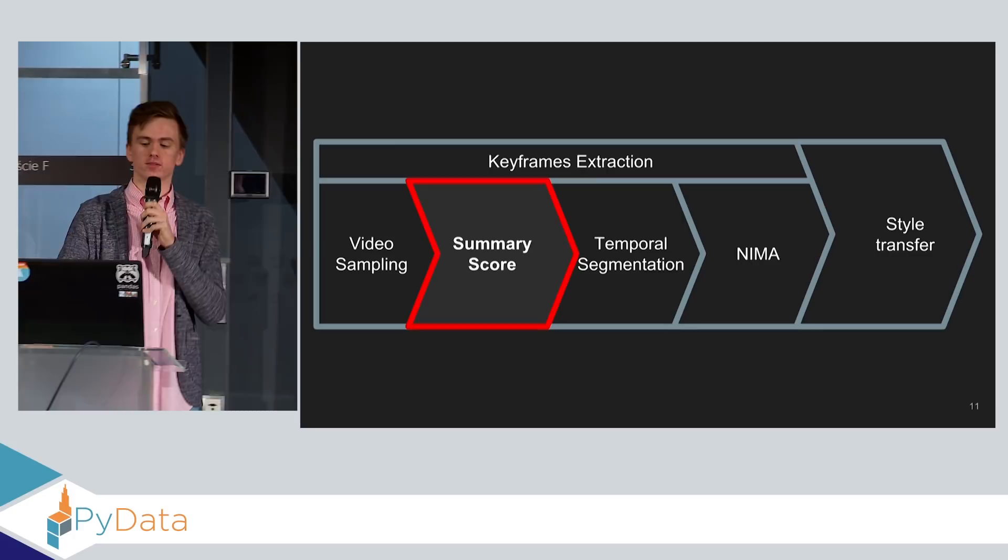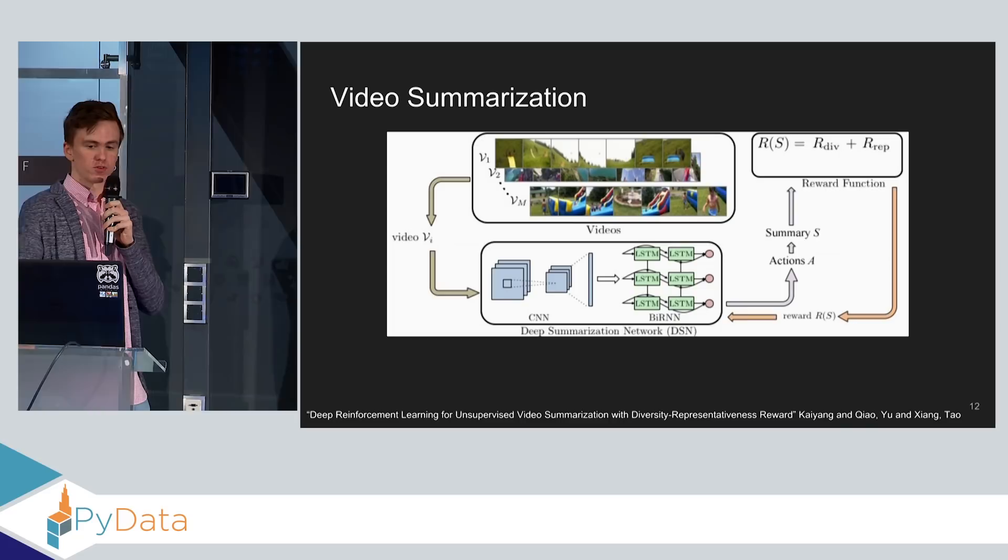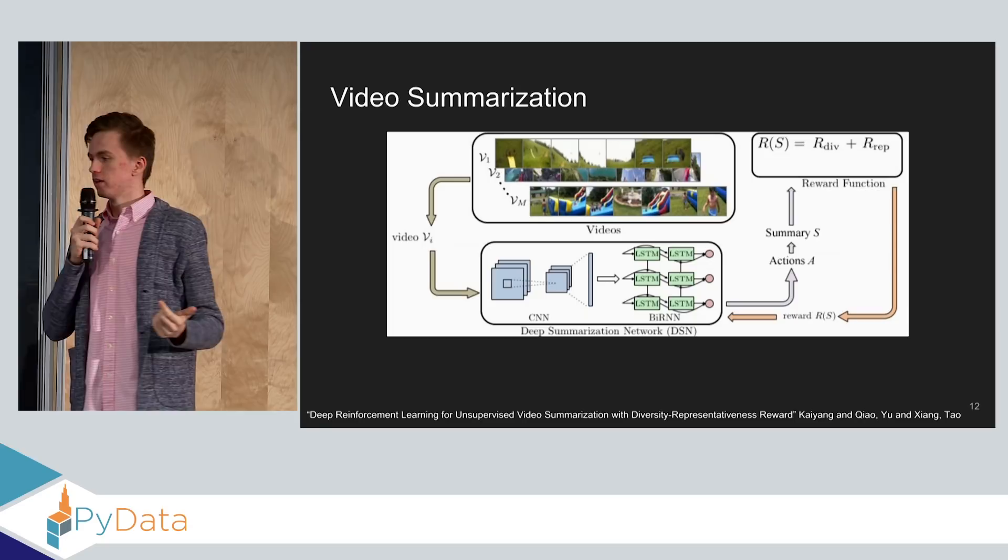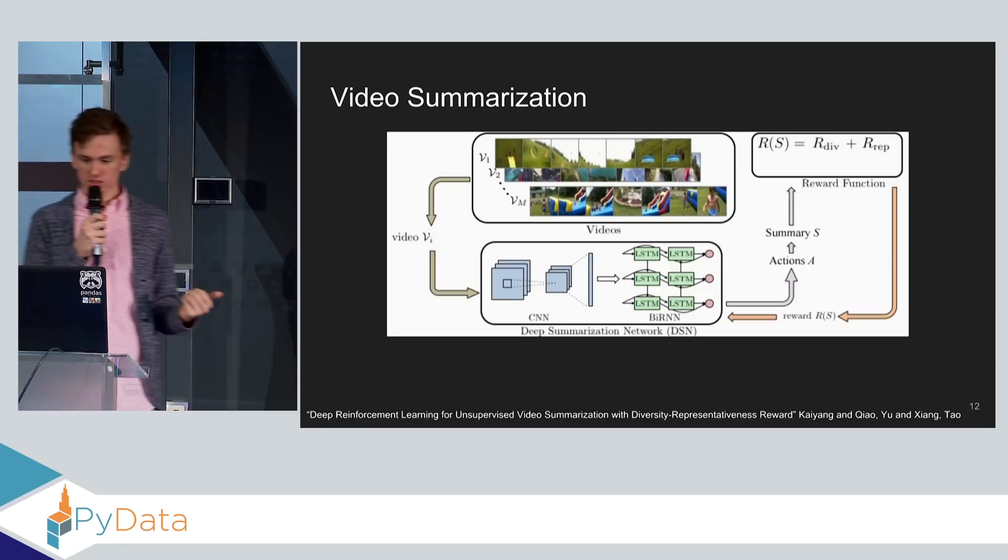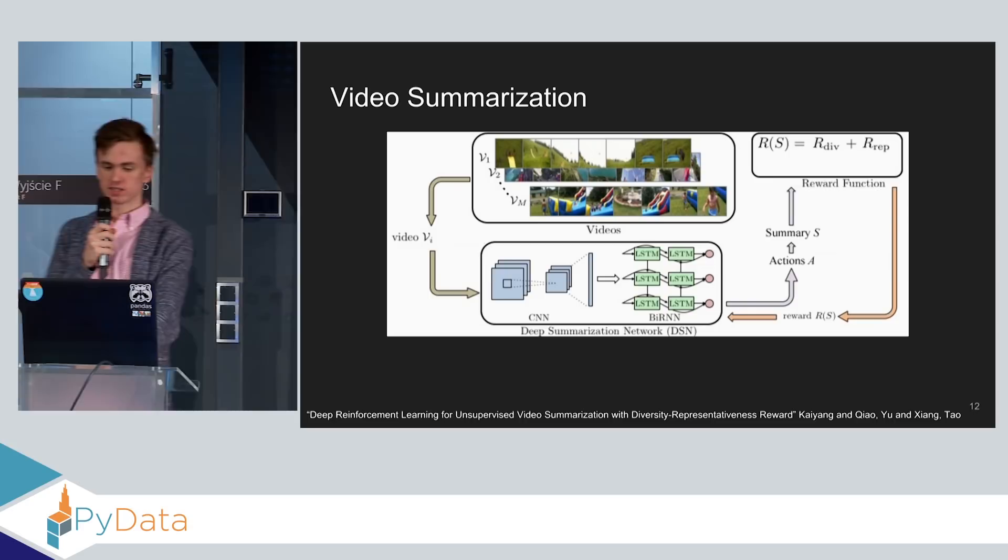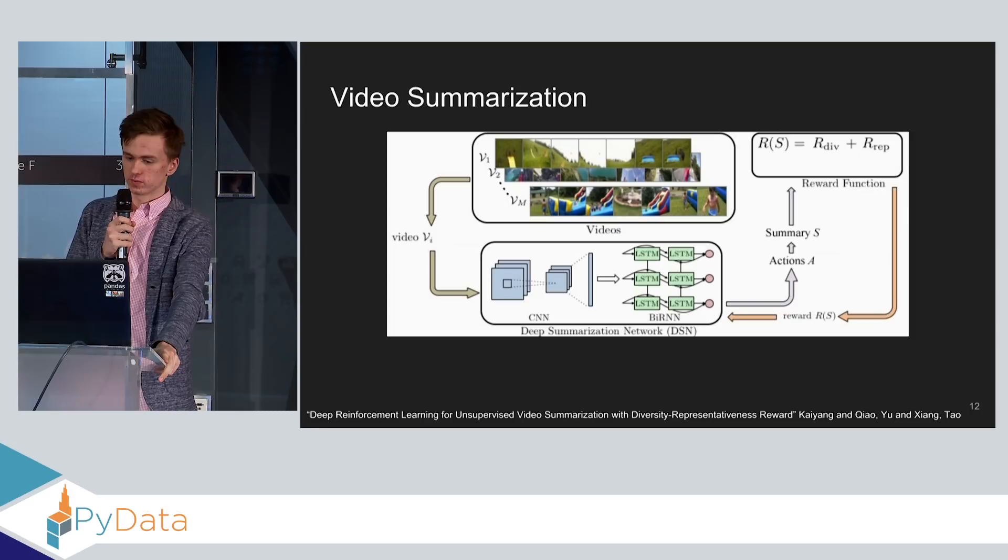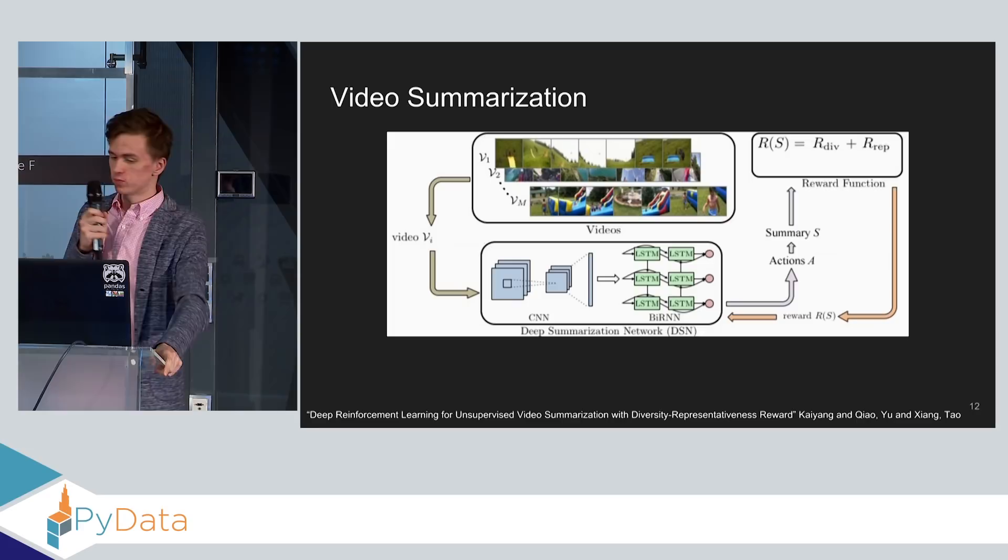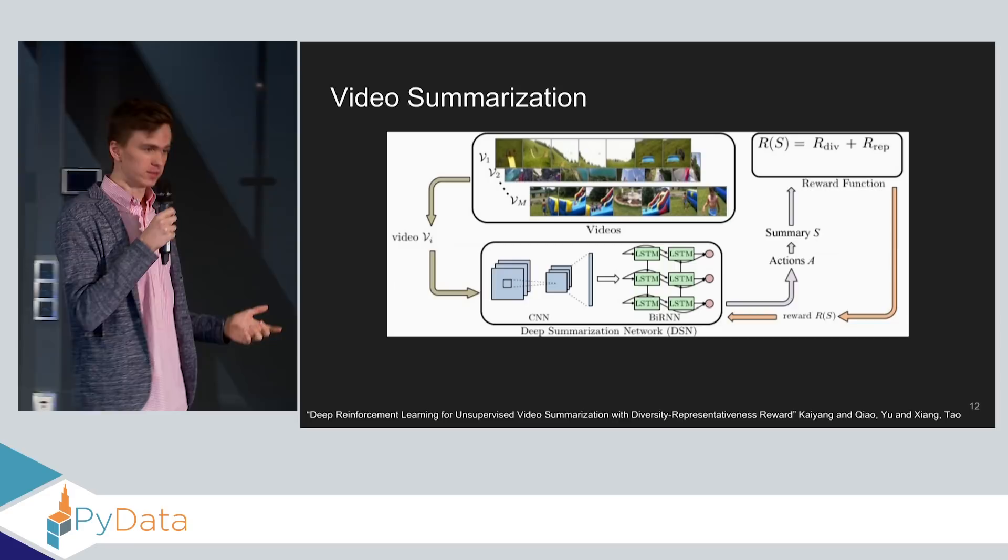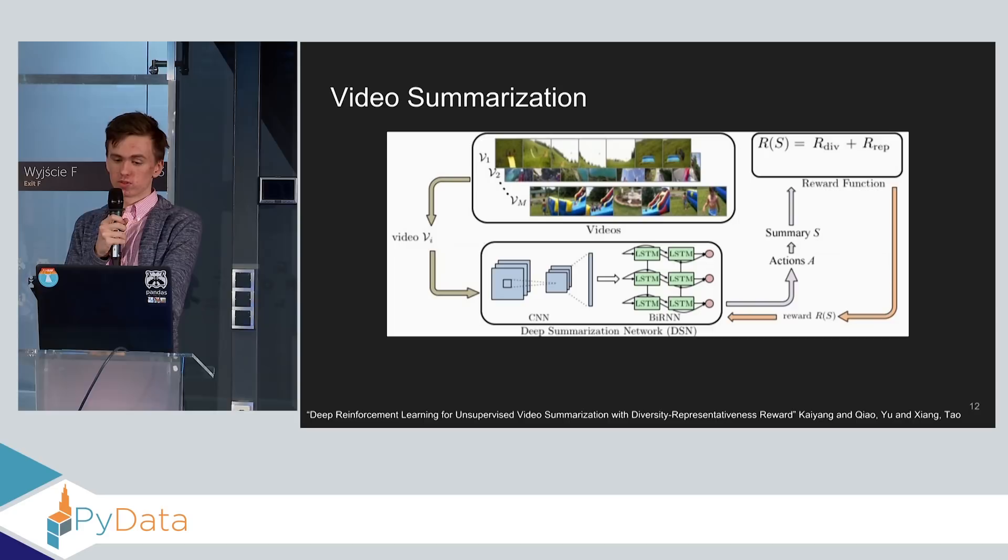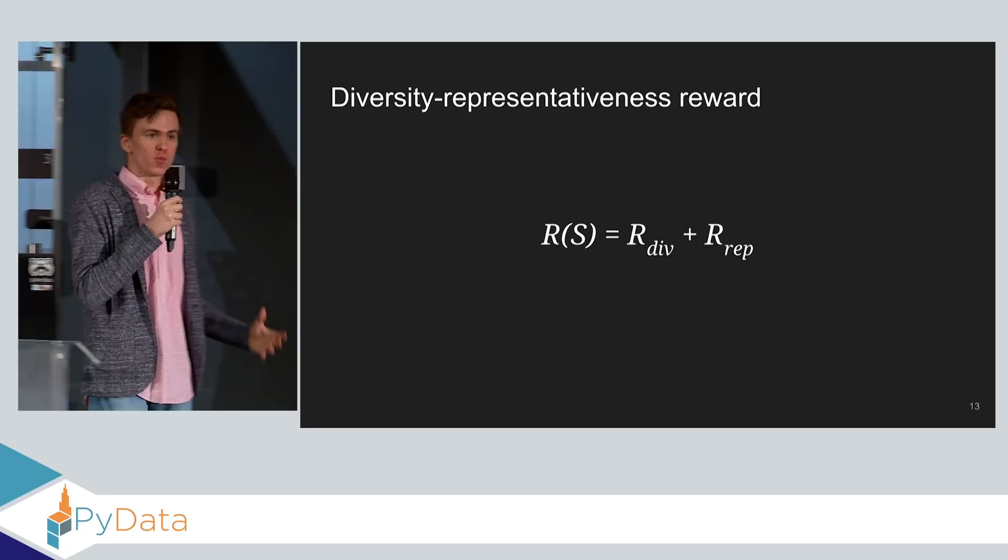Now on to our first model. Next step is summary score. We use a model from video summarization task. What is video summarization? Video summarization is a task of producing short and concise summaries of videos, which sounds pretty similar to what we're trying to do here. We use one of the best solutions for this task currently. At the core, it's a bidirectional LSTM network. And it's a reinforcement learning model. As you can see, it takes frame features and produces a score from zero to one for each frame. That shows the likelihood of this frame to be included in the summary.